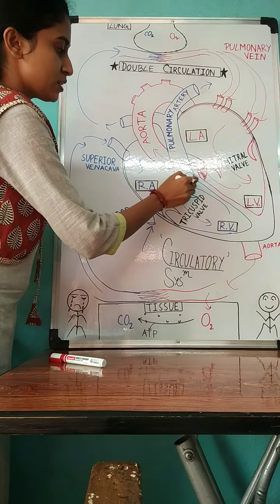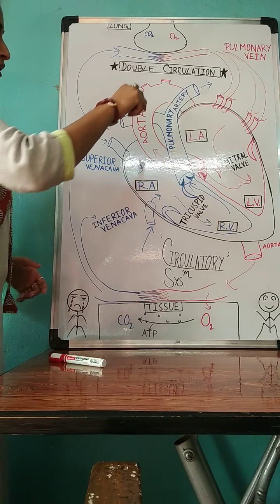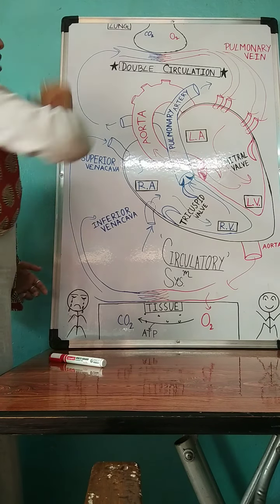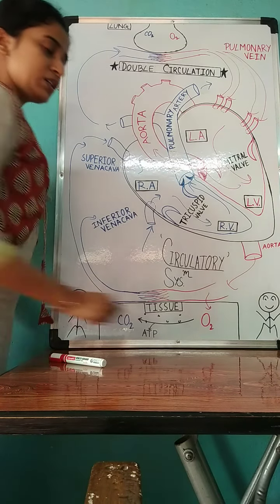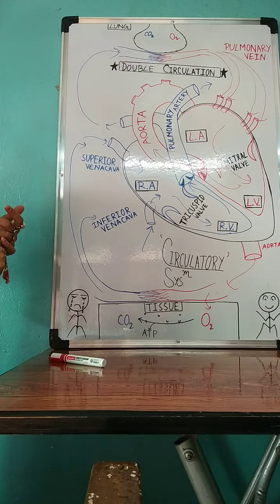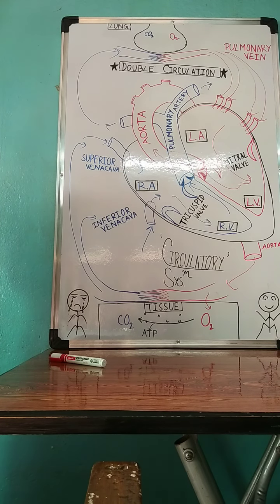Clearly here, two circulations are noticed. One is from heart to lung, that is pulmonary circulation, and another is from heart to tissue, that is systemic circulation. So it is called the double circulation.